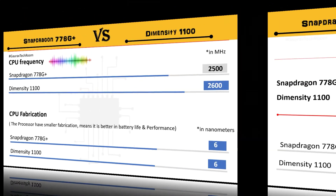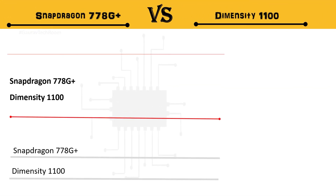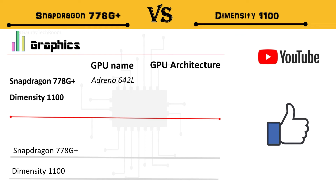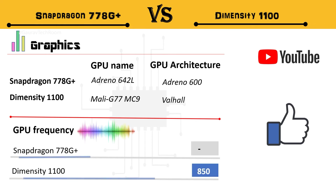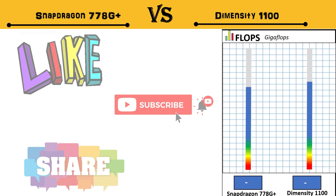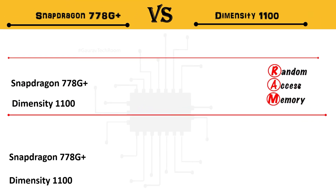In graphics, the Snapdragon GPU name is Adreno 642 and the Dimensity GPU name is Mali G77 MC9. When talking about the frequency clock, the Snapdragon GPU is 490 MHz, and the Dimensity GPU is 850 MHz.